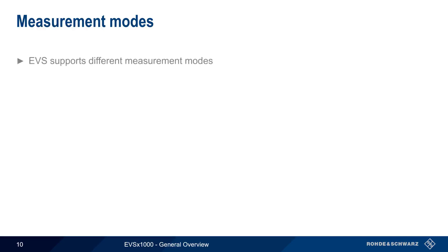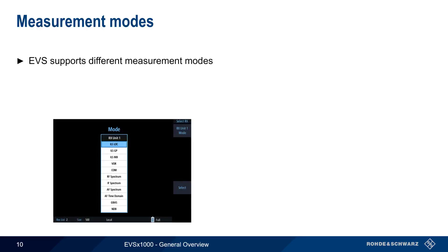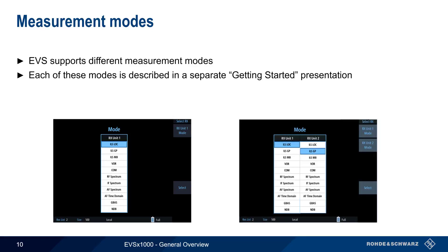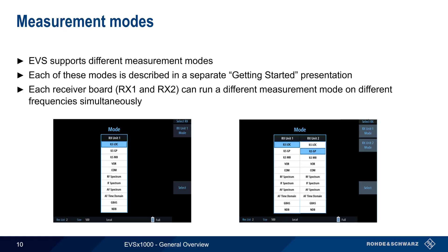Regardless of how the instrument is accessed, the EVS1000 is always operated in one of the available measurement modes. These modes include NAVAID and COM-specific modes such as ILS, VOR, GBAS, etc., as well as more general analysis tools such as RF or AF spectrum or AF time domain analysis. Each one of these different modes is described in detail in a separate Getting Started presentation. For EVS models that contain two receiver boards, a different mode can be chosen for each board, and these modes can be run simultaneously on different frequencies, although measurement results are displayed one board at a time.